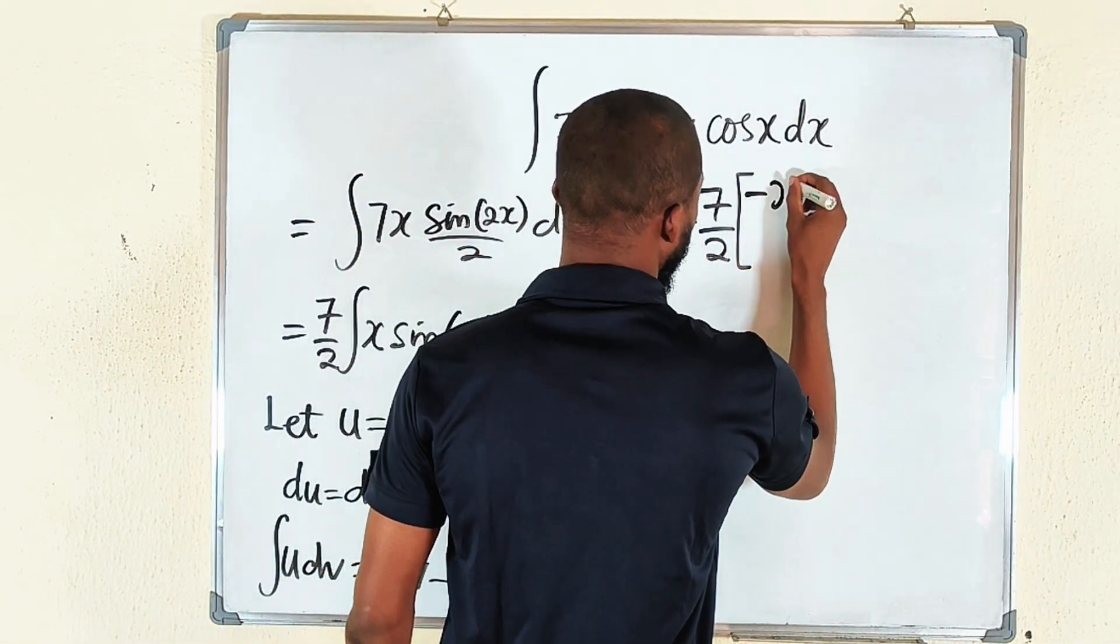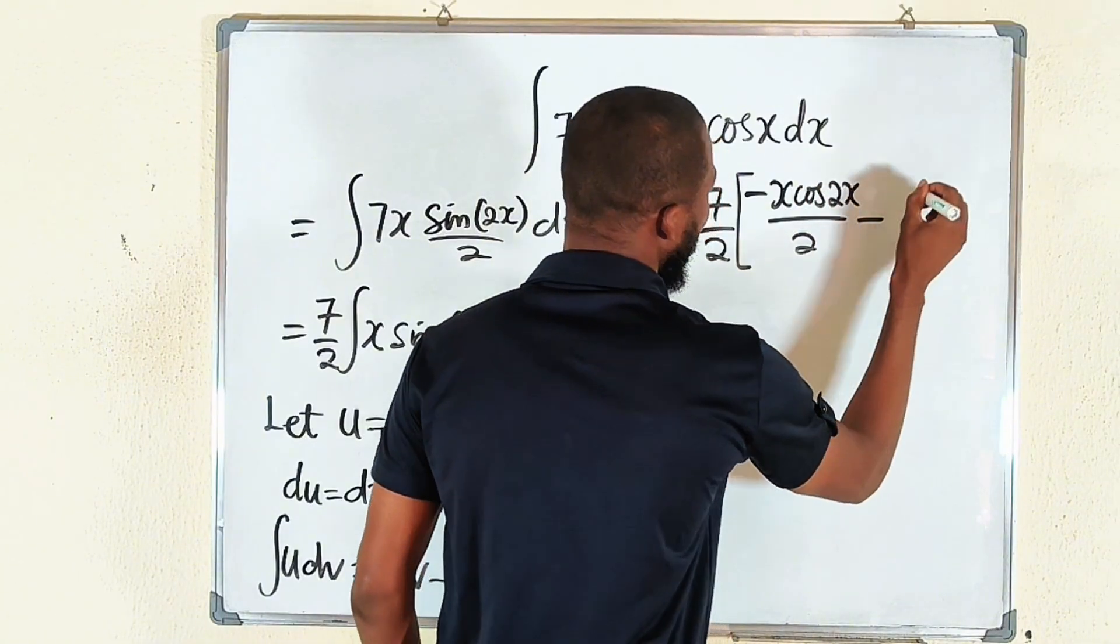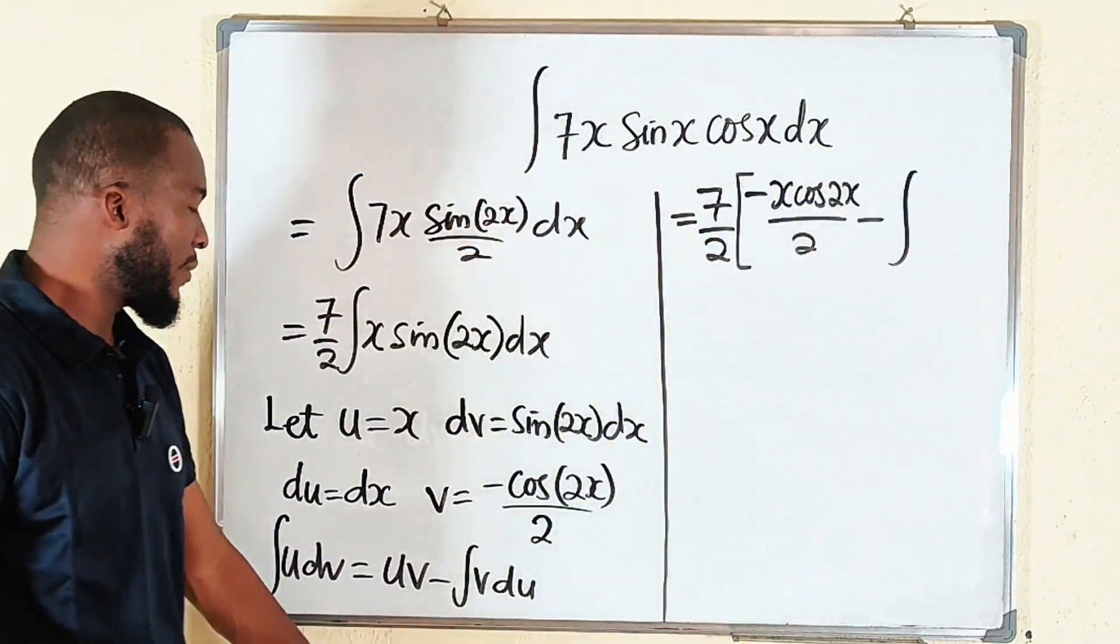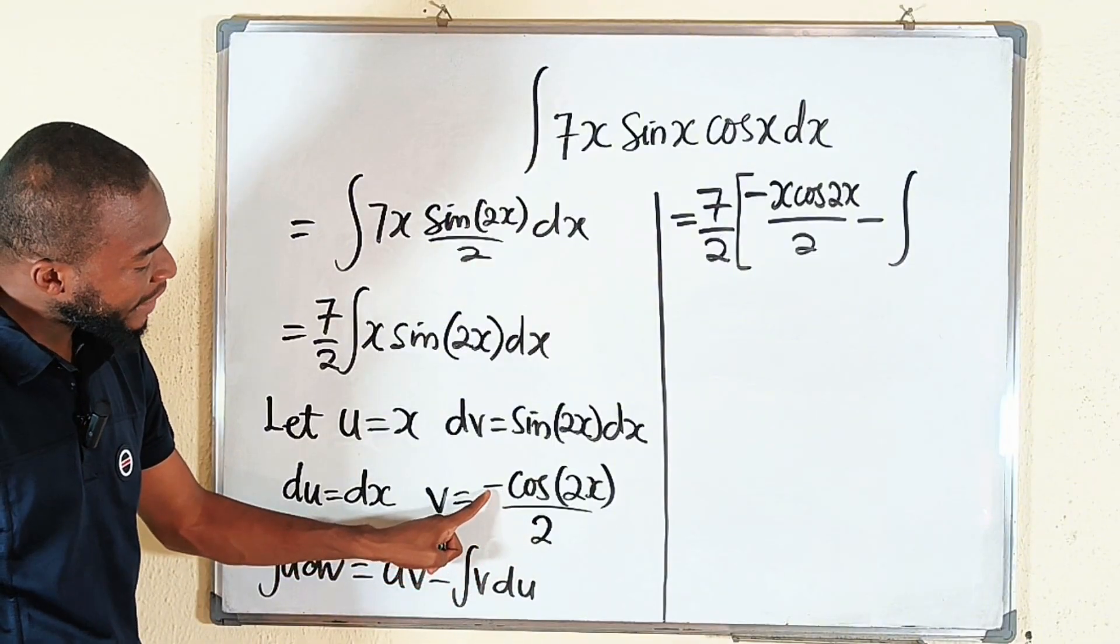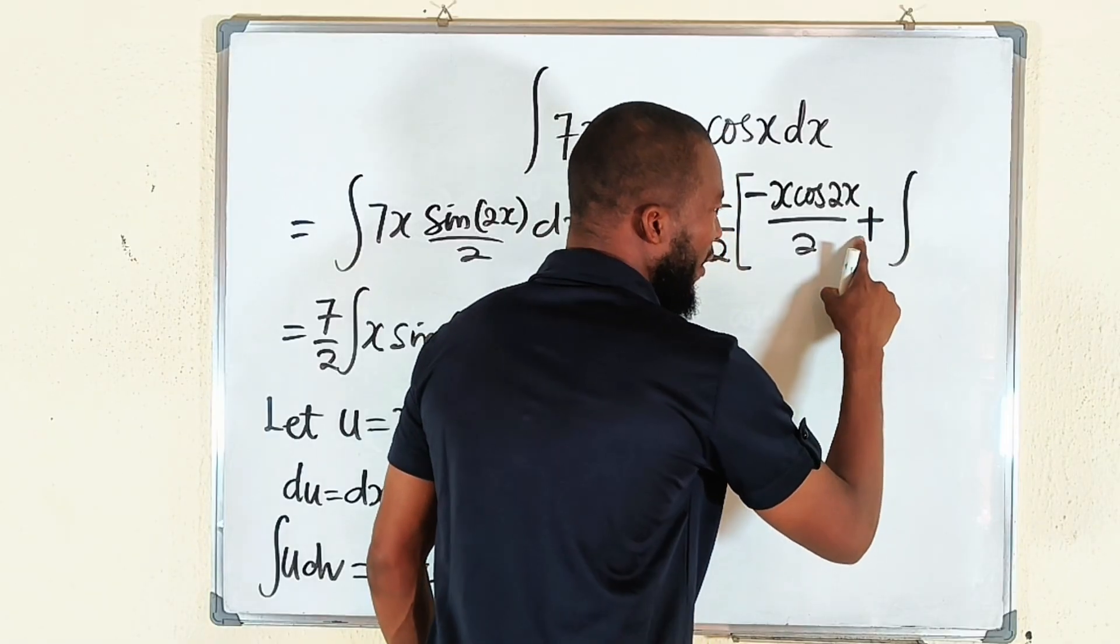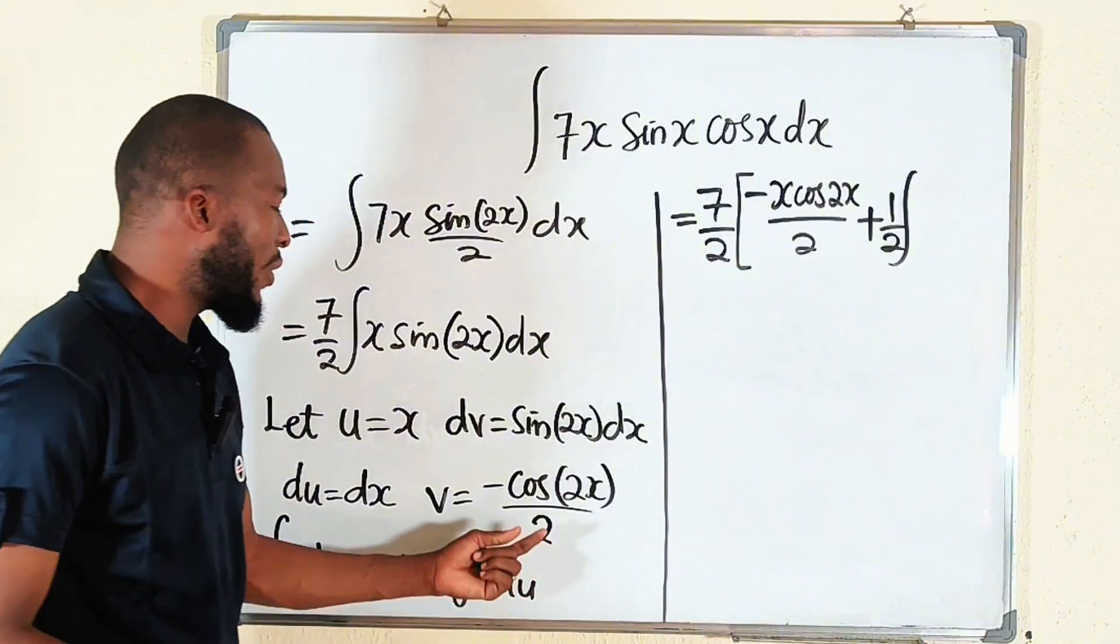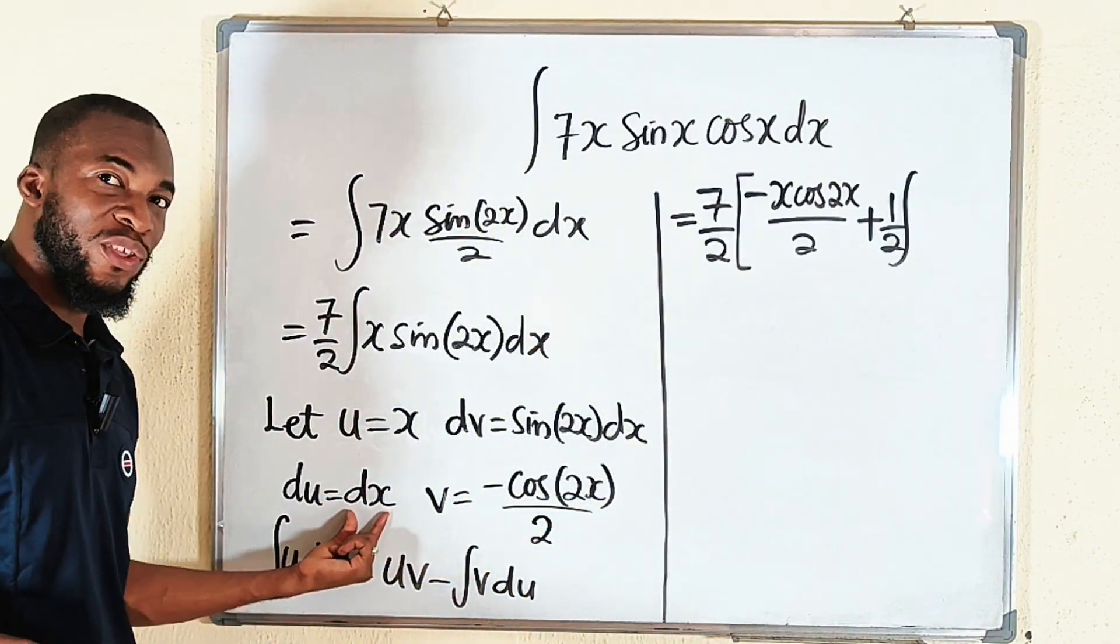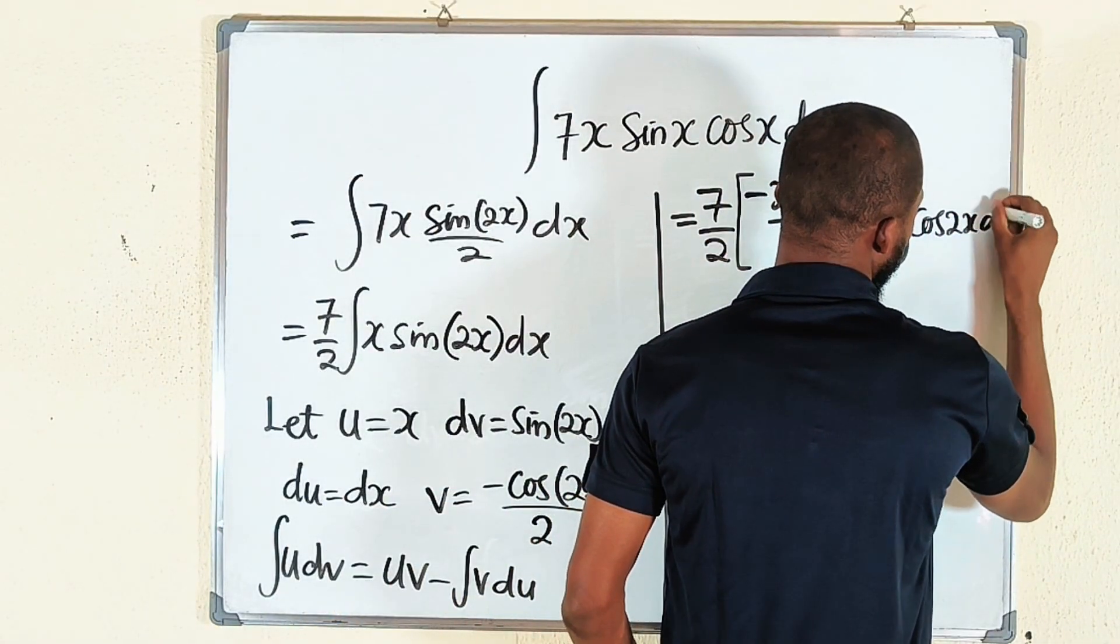Minus the integral of v du. This is our v but it has negative 1 over 2 which you can bring outside. If you bring it outside together with this minus it becomes plus and we still have 1 over 2. Then inside we only have cos of 2x dx.